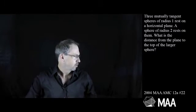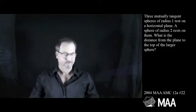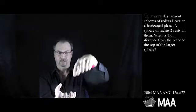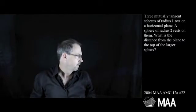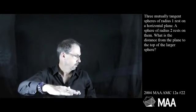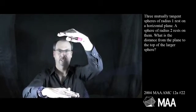A sphere of radius 2 rests on them. Alright, so I've got three spheres in a little triangle and we've got another bigger sphere sitting, I guess, in the hollow above them. What is the distance from the plane to the top of the large sphere?